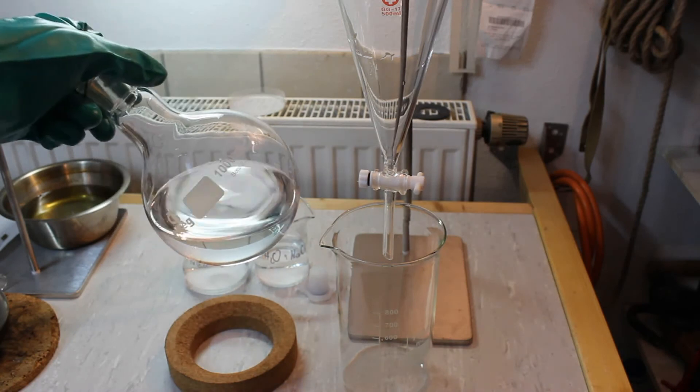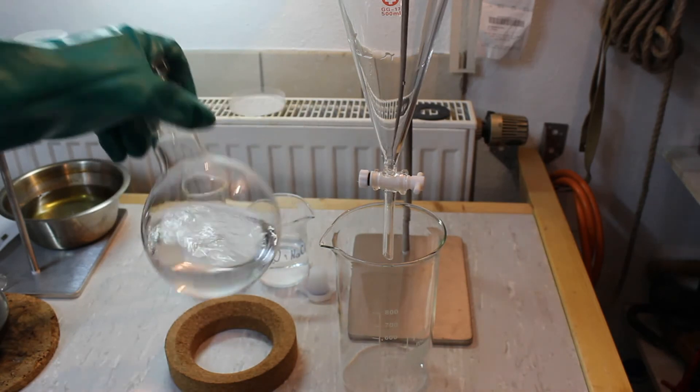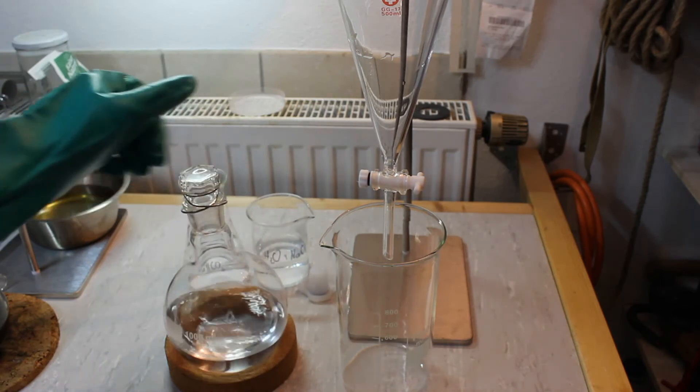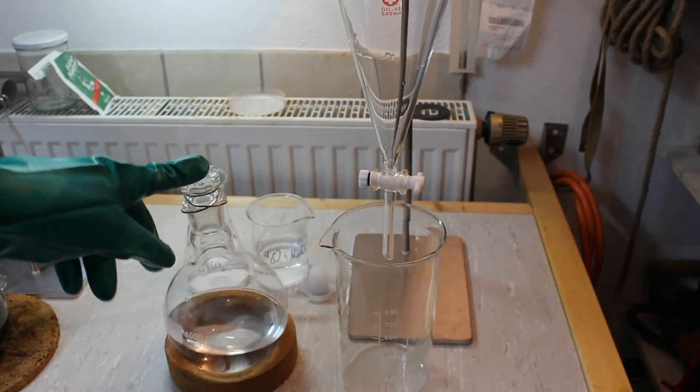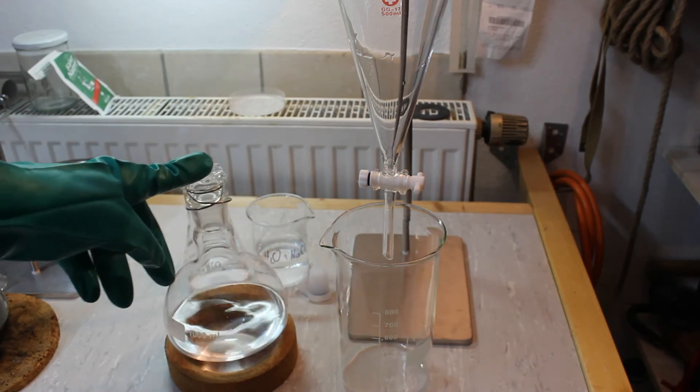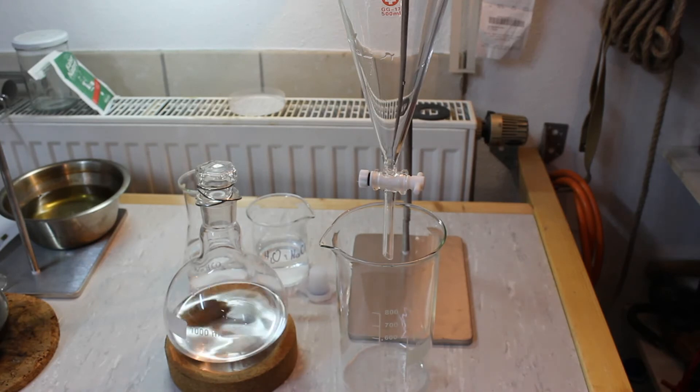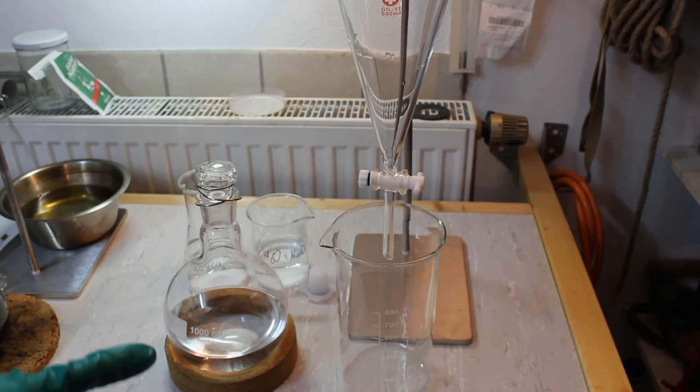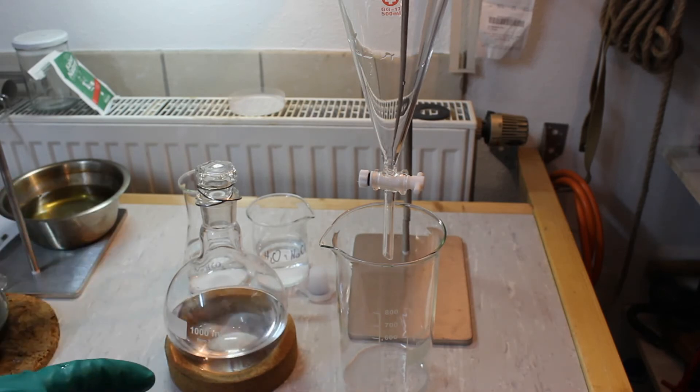After the distillation we're left with this yield of very crude diethyl ether. In order to further purify it we have to wash it first. Washing serves to remove traces of acid as well as ethanol. So we're going to wash with saturated baking soda solution twice and then once with a saturated salt solution. So here goes the first washing.